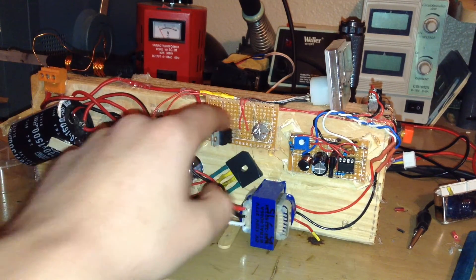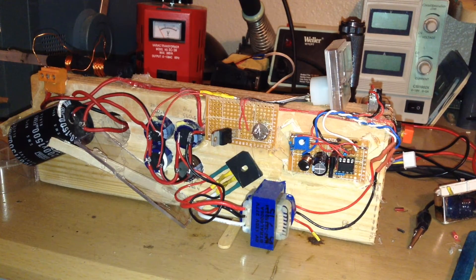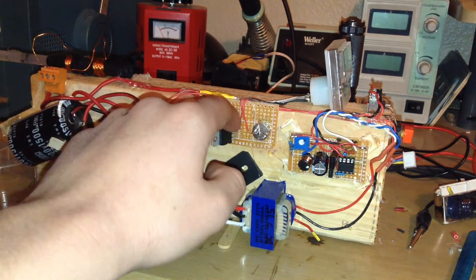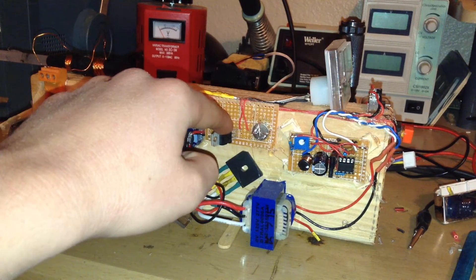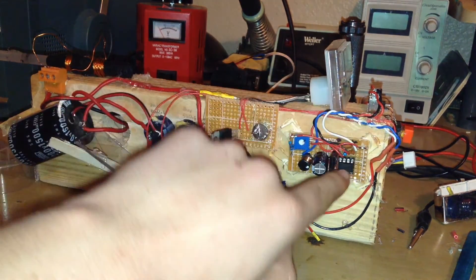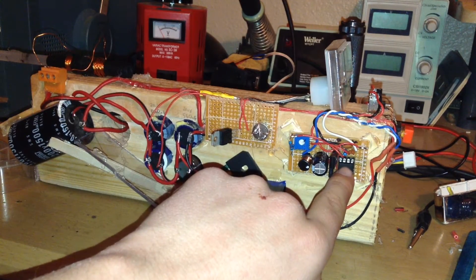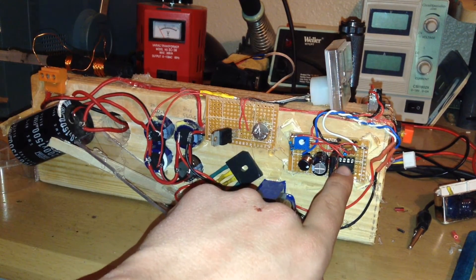This board right here is the silicon-controlled rectifier board. This is one of the only parts that I actually bought. I bought this on eBay for about 79 cents, and I also bought the 555 timer from eBay for about 35 cents.